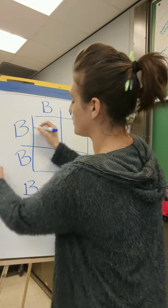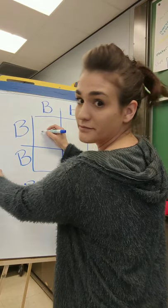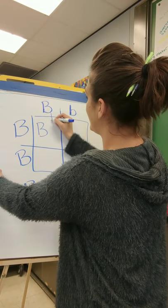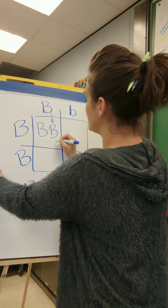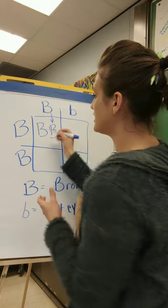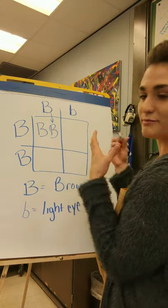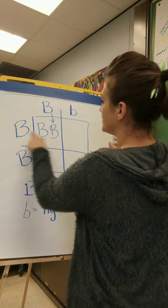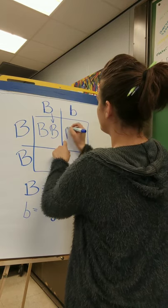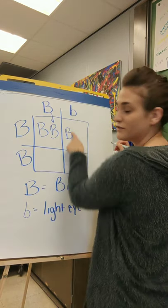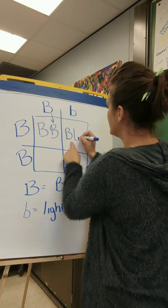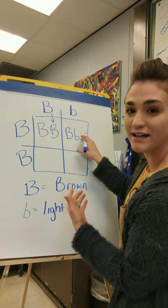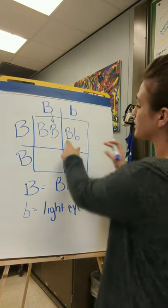In this situation you have four different options for what your child might end up looking like. We take one gene from mom — a capital B — and one gene from dad — a capital B — so this chance of offspring is going to be purebred for brown eyes. For the next one, I take a capital B from mom and a lowercase b from dad, and this offspring will be a carrier for light-colored eyes but will show brown eyes, because they're a hybrid.